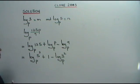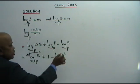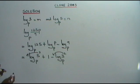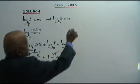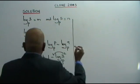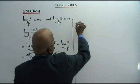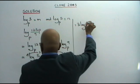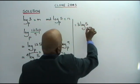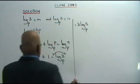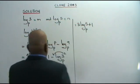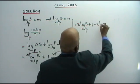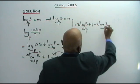Next step: we bring the power forward using the law of logarithm. So when you bring it forward, you get 3 log 5, base P, plus 1, minus 2 log 3, base P.